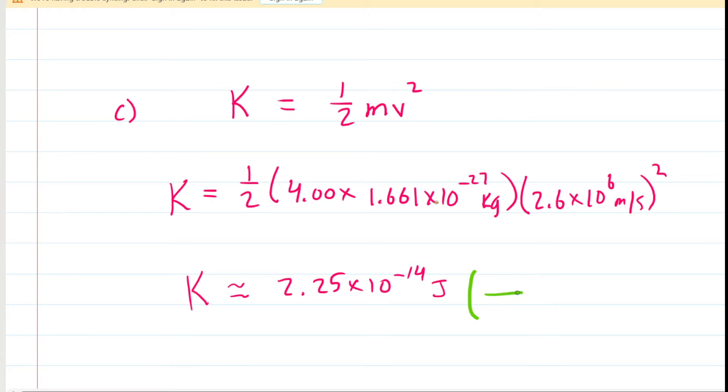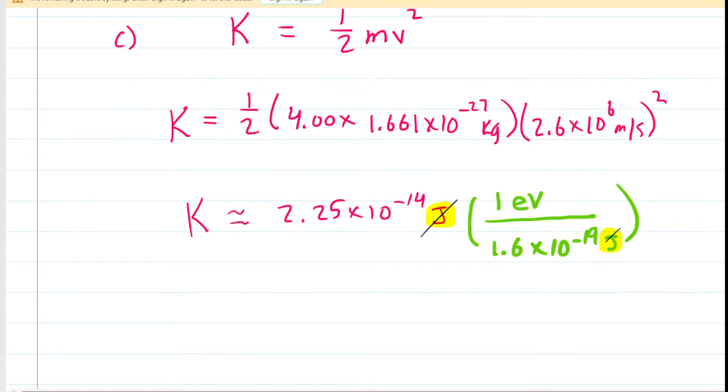So we're going to do a conversion into electron volts, and it turns out that 1 electron volt is equivalent to 1.6 times 10 to the negative 19th joules. If we set up the conversion factor in that manner, the joules that we're starting out with and the joules in the denominator of our conversion factor will cancel out. So we do that conversion, and we end up with approximately 1.4 times 10 to the power of 5 electron volts. So this would be the correct answer for Part C.